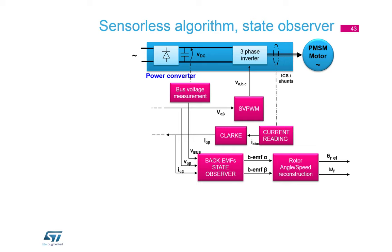It's called the Back EMF State Observer because it gives you, as a result of intermediate calculations, the representation of the back EMF voltage from the motor — equivalent to the voltage induced by the rotating rotor within the windings. This gives you the amplitude, which is effectively the motor speed, and the phase, which is the rotor position. The state observer represents the physical state of the motor using mathematical matrices. It takes as inputs i_alpha, i_beta (the rotating current), v_alpha, v_beta (the voltage delivered to the power stage), and the bus voltage.